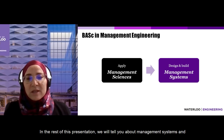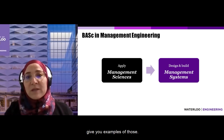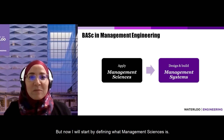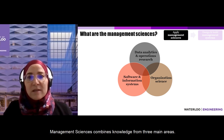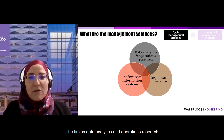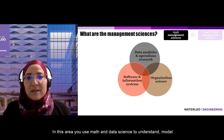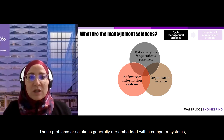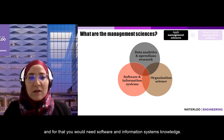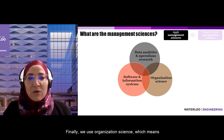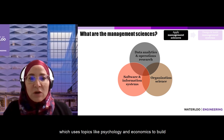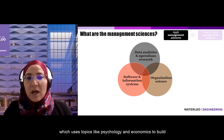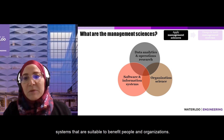We will tell you about management systems and give you examples throughout this presentation. But first, management sciences combines knowledge from three main areas. The first is data: you use math and data science to understand, model, and solve real-life problems. These solutions are generally embedded within computer systems, for which you need software and information systems knowledge. Finally, we use organization science, which draws on topics like psychology and economics to build systems that benefit people and organizations.